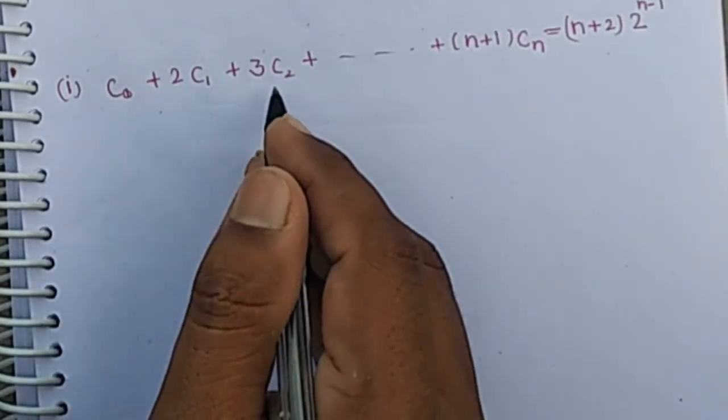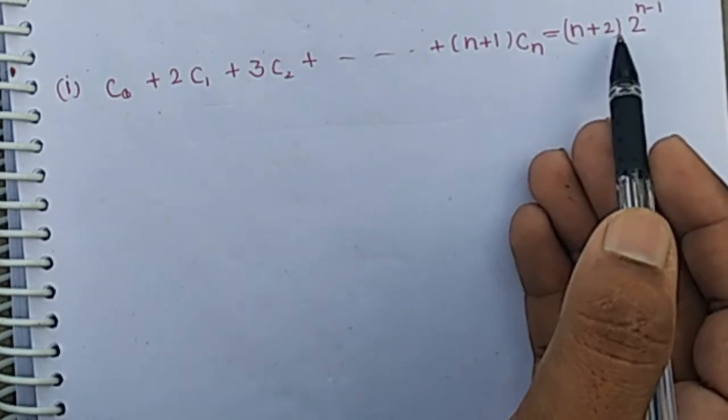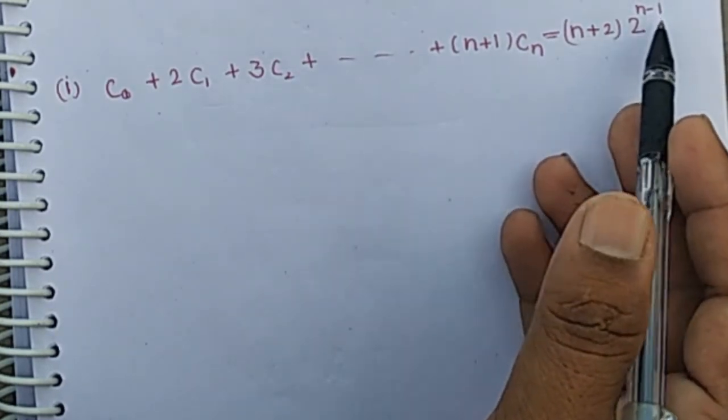The question is: C0 plus 2C1 plus 3C2 plus ... plus (n+1)Cn equals (n+2) times 2 to the power n minus 1.